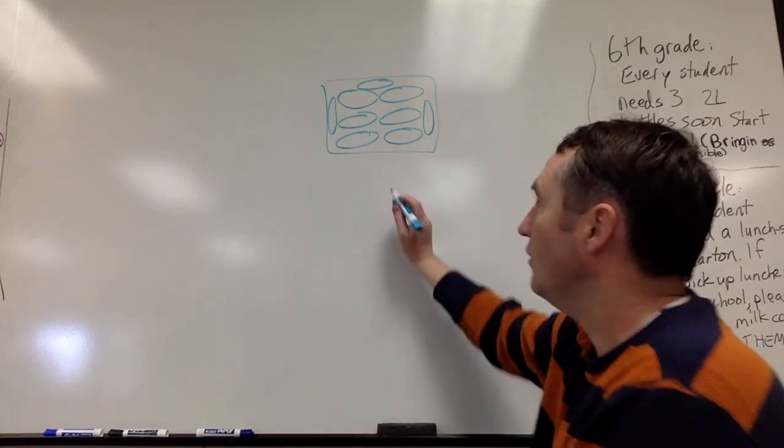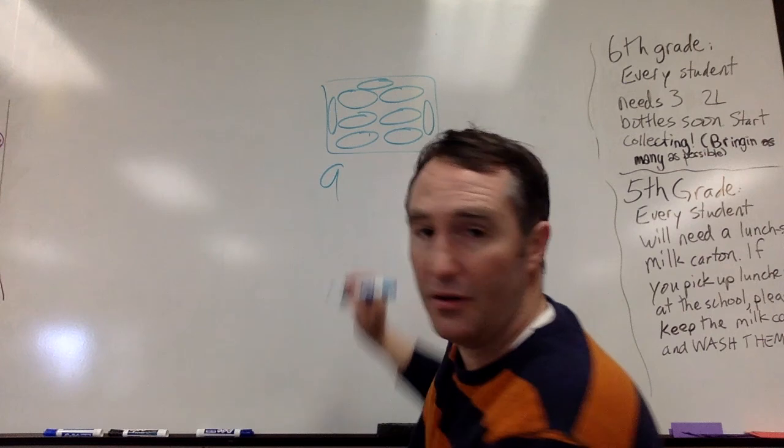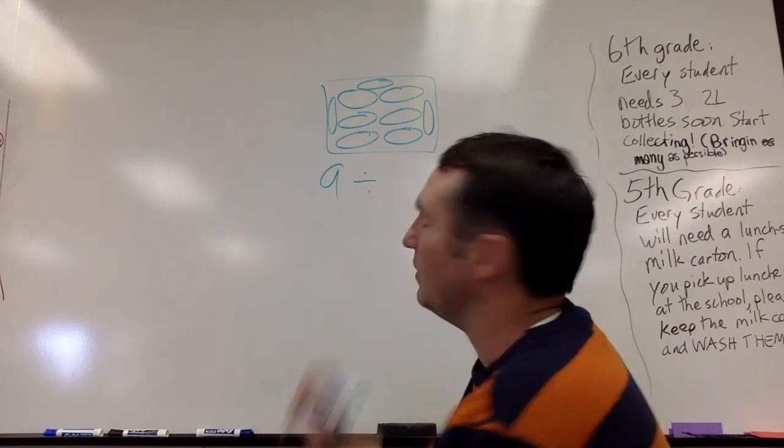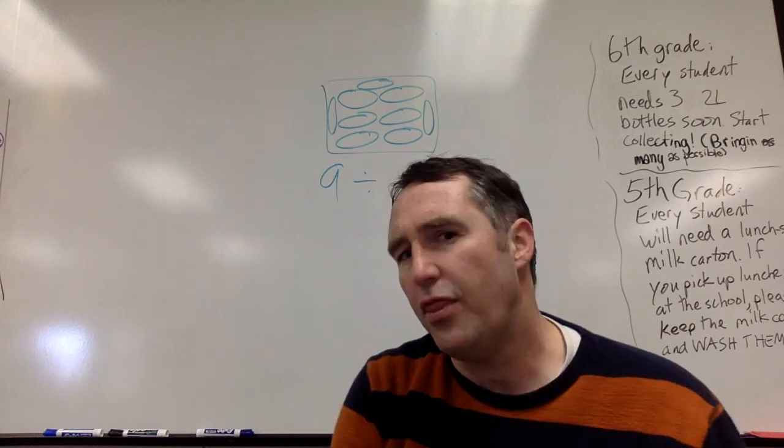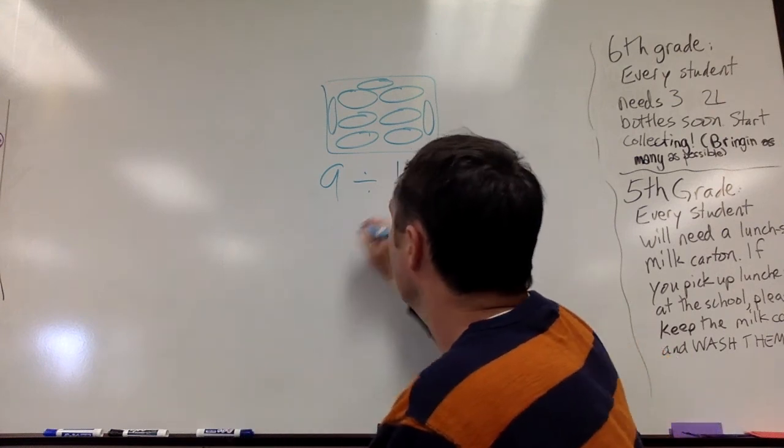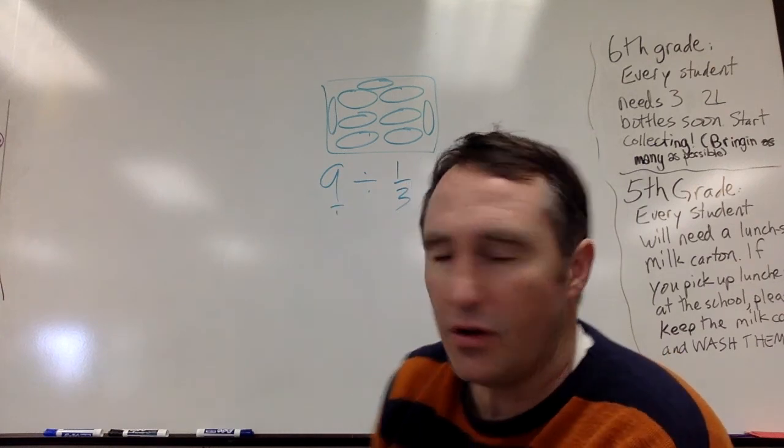Well we're going to divide them up. So right down here we're going to write down that we've got nine pounds of turkey and we are going to divide it up into one-third pound burgers. Okay, now really this is nine over one, it's the same thing so I'll put that one there.